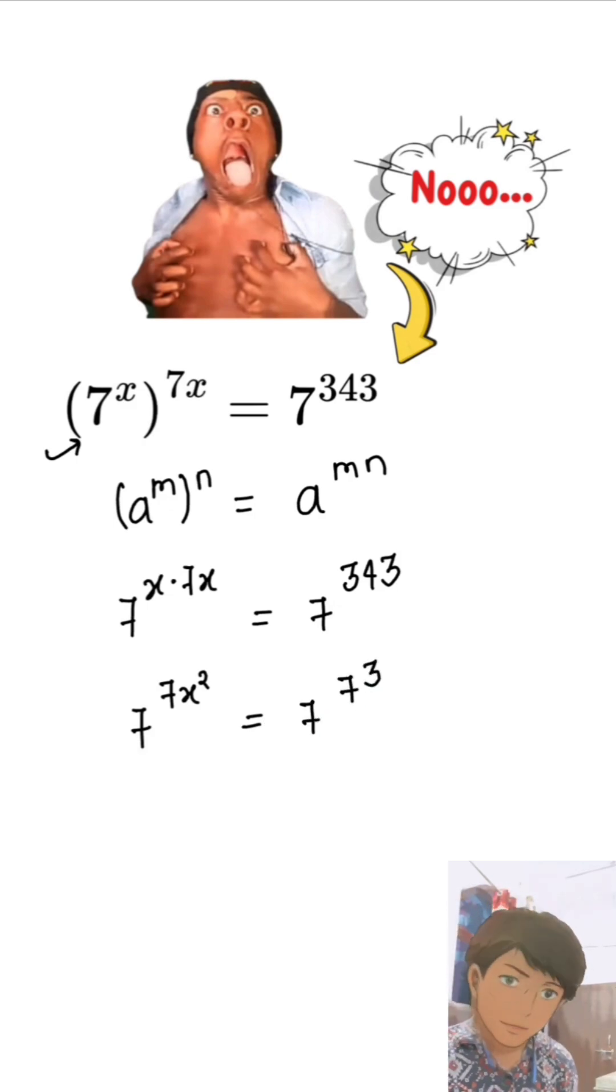Here is another property that comes when the bases are equal. When the bases are equal, we can equate the both powers. So 7x square equal to 7 cube.